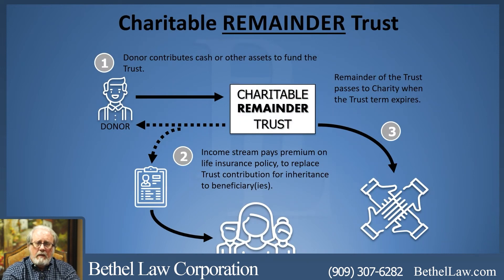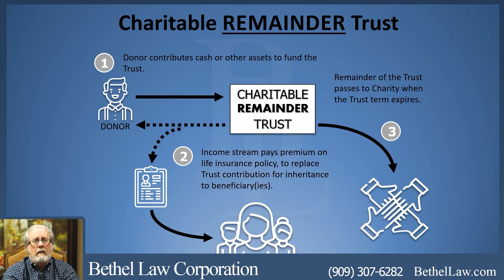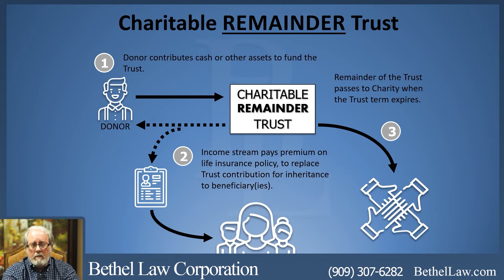One of the challenges with the charitable remainder trust is that the trust corpus ultimately goes to the charity — it does not come back to the family. The family receives income throughout the term, but they do not get the trust corpus returned to them, unlike in the charitable lead trust where they do.